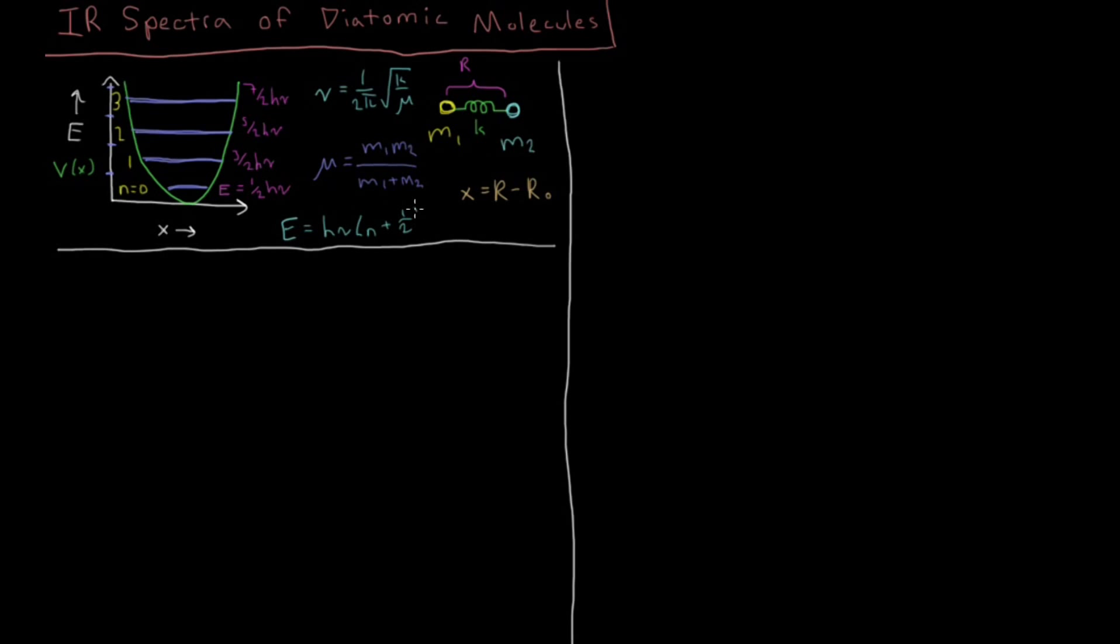So these energy states we have plotted here. Here's the potential energy function, the one half kx squared, and inside of here we have the lowest energy state is one half h nu, and then the next energy state is three halves h nu, five halves, seven halves, etc. So we have a bunch of evenly spaced energy levels inside this potential energy well here.